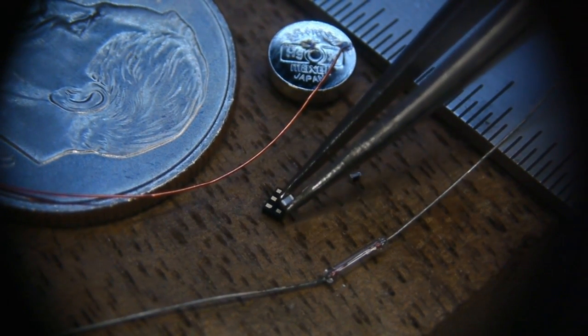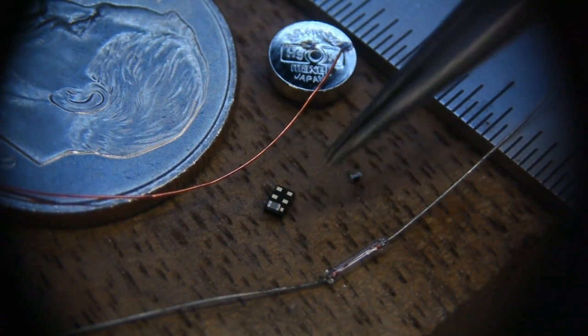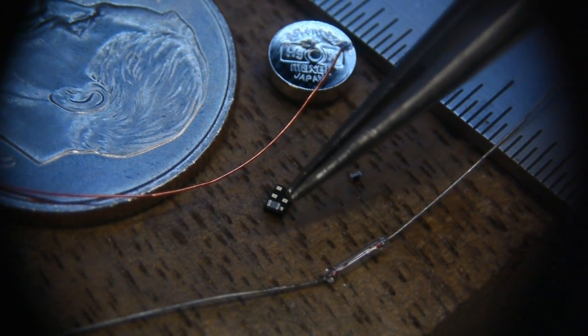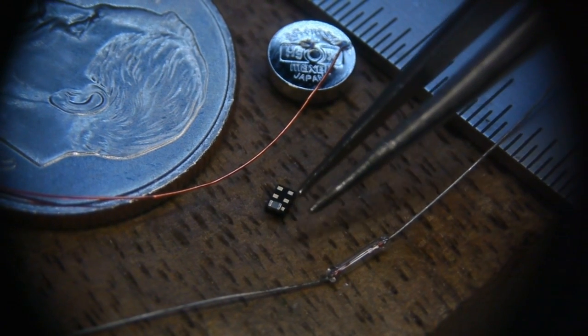The convenient thing about using 0201 with this particular package is that the lead spacing is just about right so that you can put this on here and without even a piece of wire, with just a blob of solder, we can connect this up. What I needed to do is make one go diagonally and the other part go between leads and the spacing is just about right to make this work.